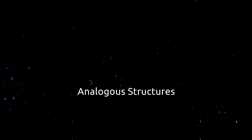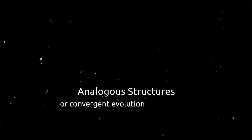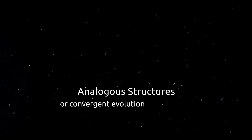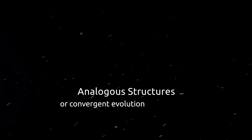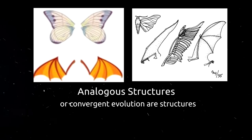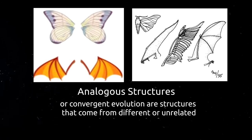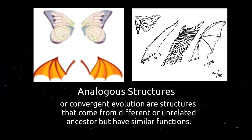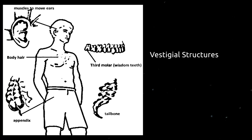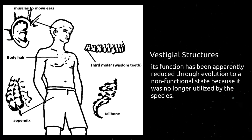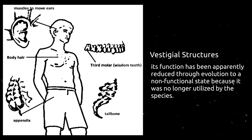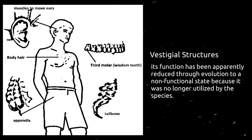Analogous structures, or convergent evolution, are the opposite of homologous structures. In analogous structures, these are structures that come from different or unrelated ancestors but have similar functions. As for vestigial organs, vestigial structures are examples of homologous structures that have apparently been reduced through evolution to a non-functional state because the function is no longer utilized by the organism — that is why the organ is lost or reduced.